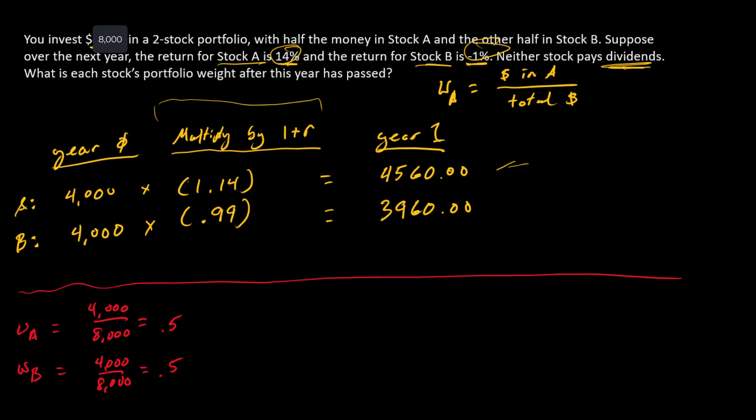Let's pay close attention to these numbers. Notice that for stock A, this number is bigger than the starting number—makes sense, it had a positive return. For stock B, this number is smaller than the beginning value, which also should make sense because stock B had a negative return.